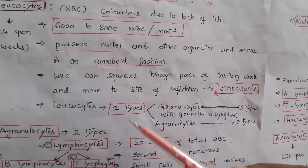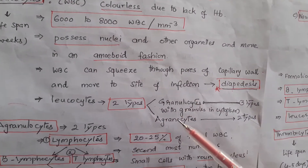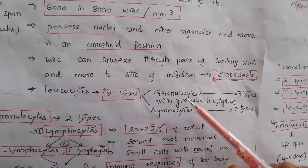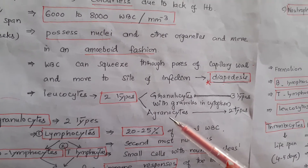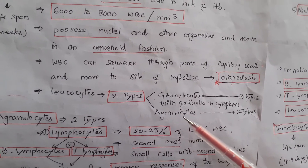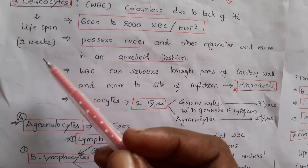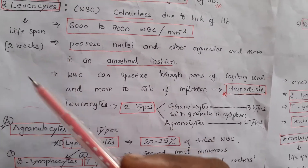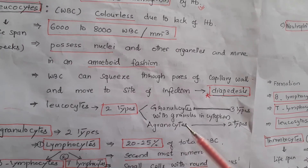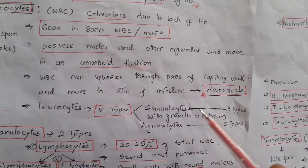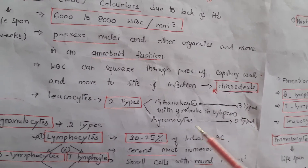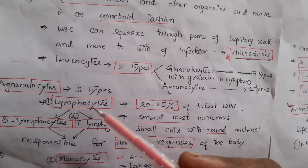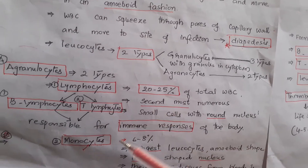Leukocytes are of two types: granulocytes and agranulocytes. If granules are present in the cytoplasm, they are granulocytes; if granules are absent, they are agranulocytes. The lifespan of WBCs is about two weeks, compared to 120 days for RBCs. Granulocytes are of three types and agranulocytes are of two types.